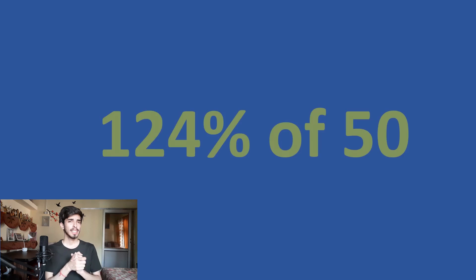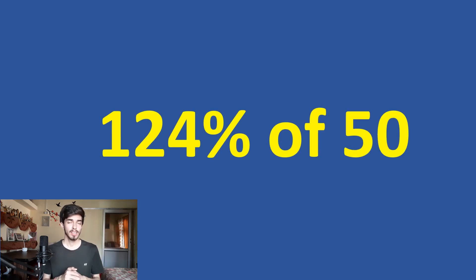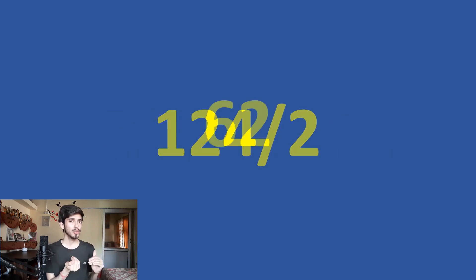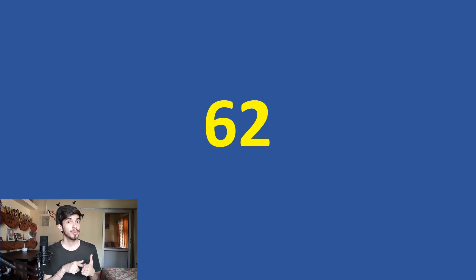The main trick is that percentages are reversible: X% of Y is also Y% of X. For example, tell me 124% of 50 — it is pretty difficult to calculate. But tell me 50% of 124, which is just 124 divided by 2, which is just 62. So it is so simple — 124% of 50 is 62.